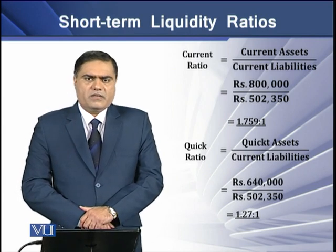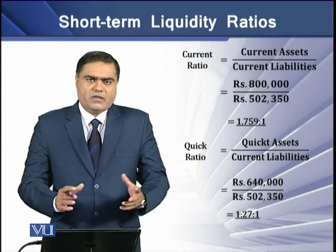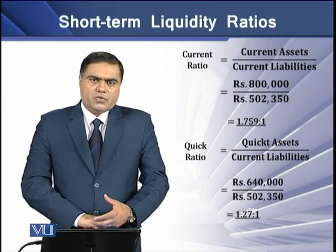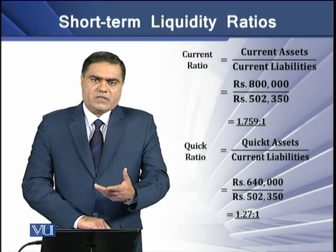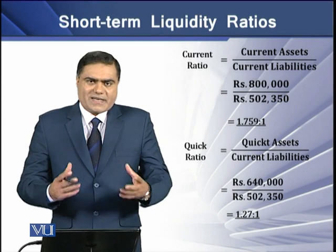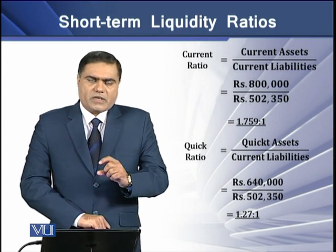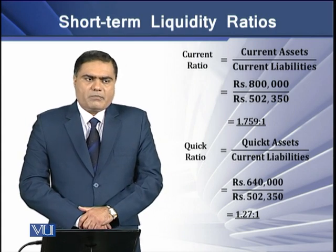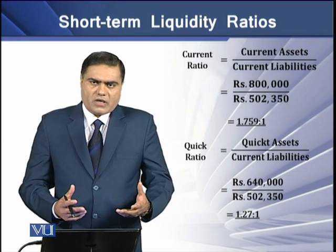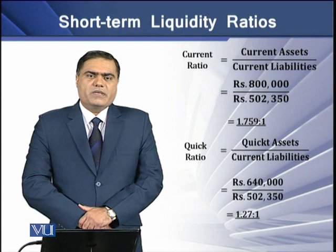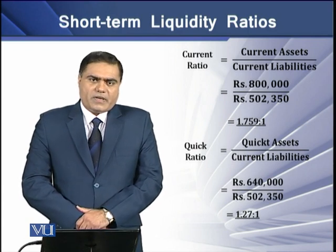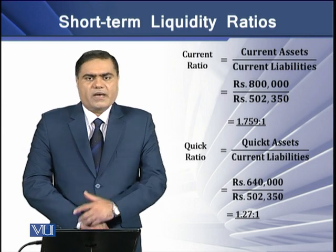Apparently, this is a fairly good condition for a company to have current assets in excess of its current liabilities. There is no fixed standard for the current ratio, but accountants generally agree on a ratio of 2, meaning current assets should be at least twice the current liabilities.